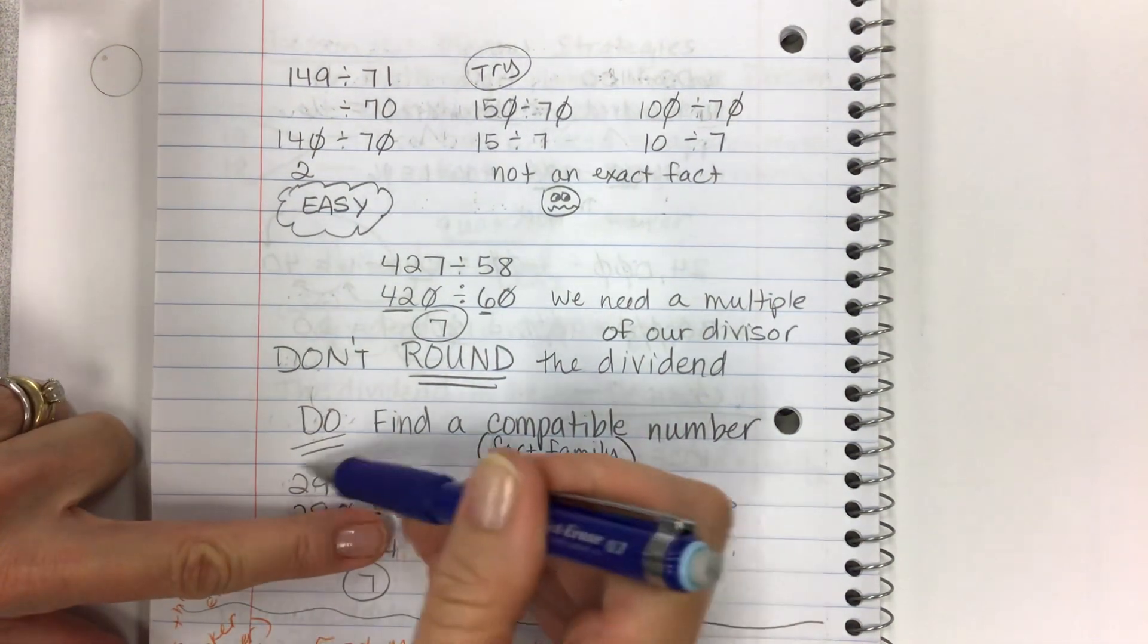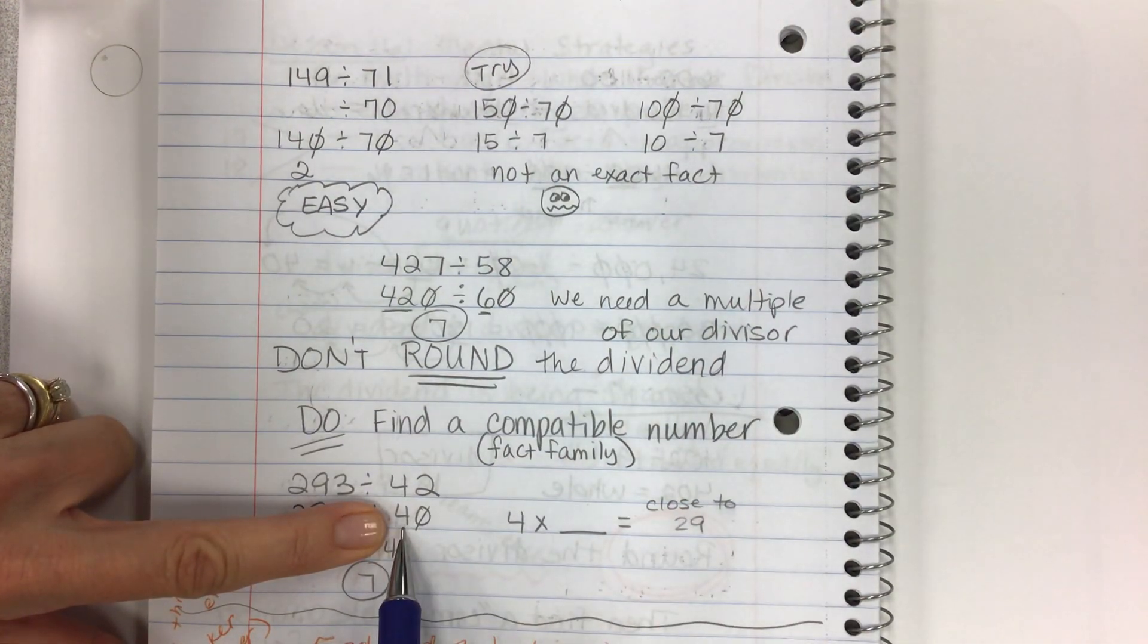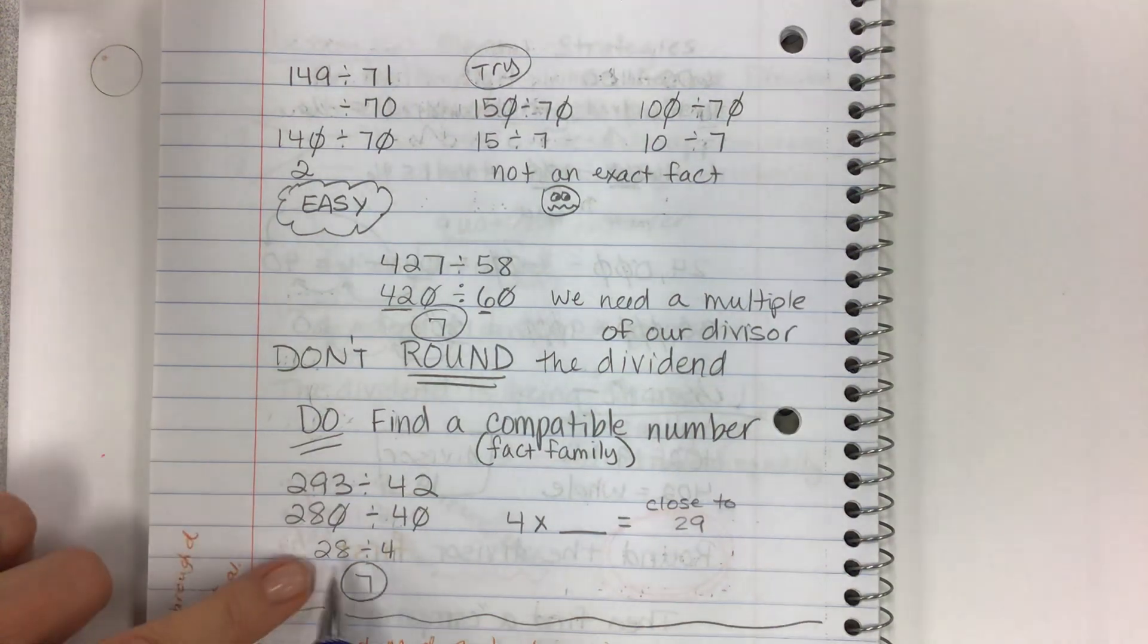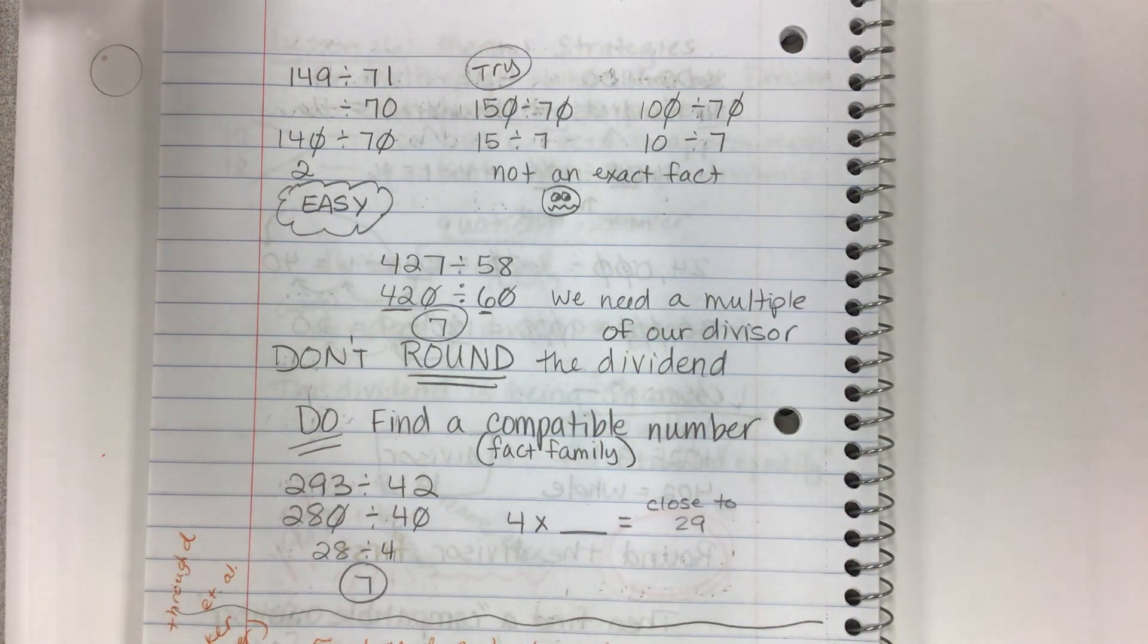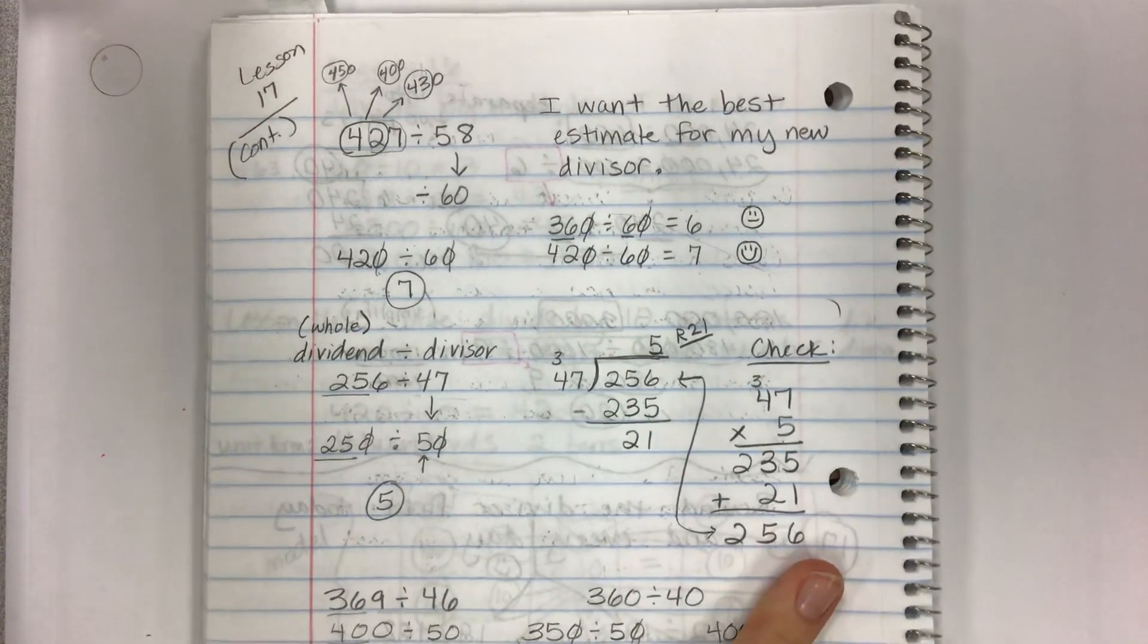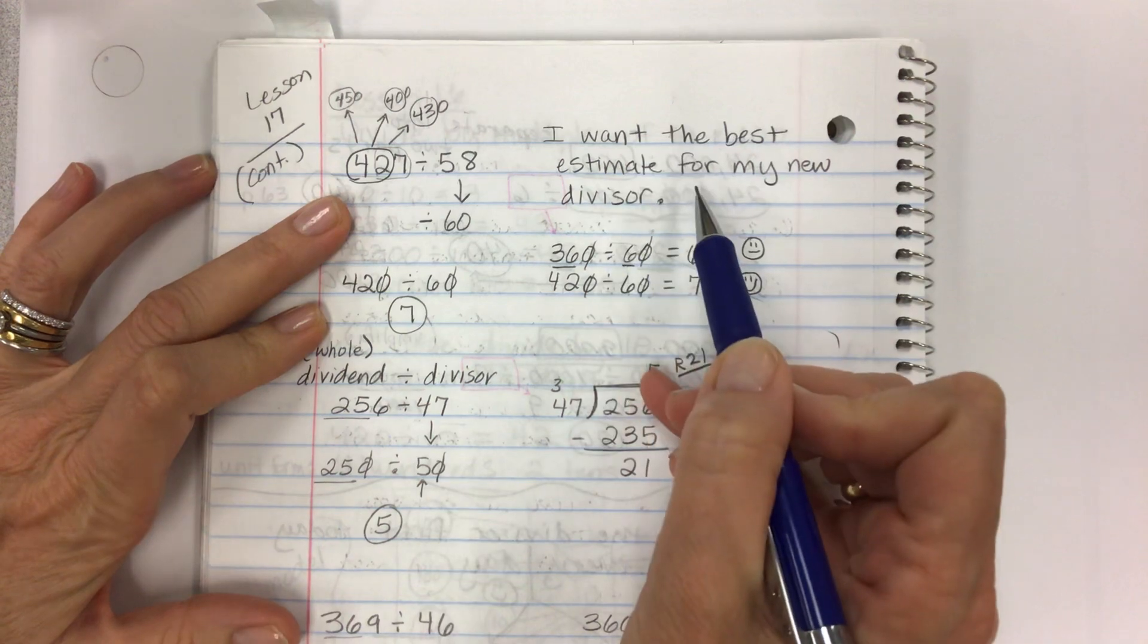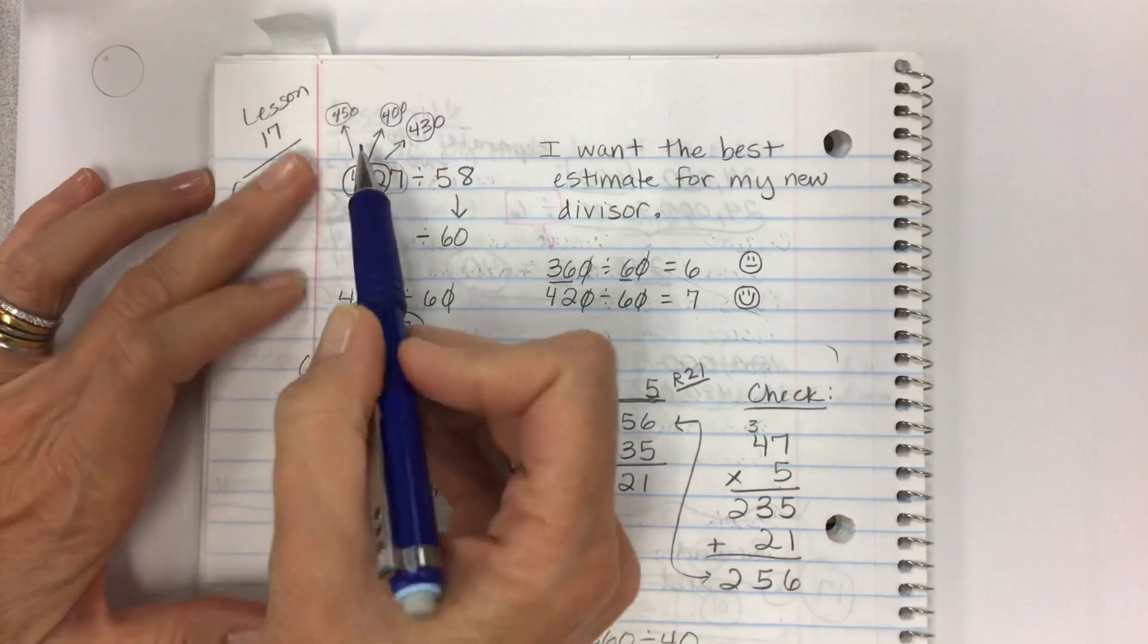6. So 42 is a multiple of 6. That's where we get our easy answer of 7. Do find a compatible number from the fact family. Round the divisor first. Get a multiple of 4. Out of this number, you're going to create a multiple out of this number that is a multiple of that. And so that's where we get the 280. Because 28 is a multiple of 4.